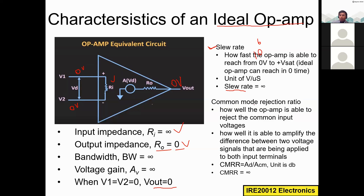Another parameter is called Common Mode Rejection Ratio, simply referred to as CMRR. It describes how well the operational amplifier is able to reject common input voltages. Common input voltages means applying the same voltage to both terminals — for example, applying three volts to both v1 and v2.